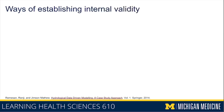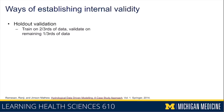There are a few different ways that you can establish internal validity. The simplest way is holdout validation, which is what I showed you on the last slide. In holdout validation, you train the model on two-thirds of your dataset and you evaluate or validate your model on the remaining one-third of your data. One key thing to note is that the two-thirds and one-third are assigned randomly, typically — you don't systematically assign those cases.